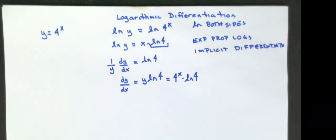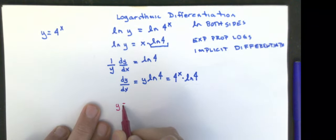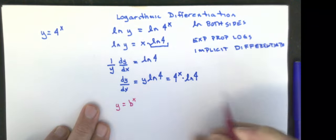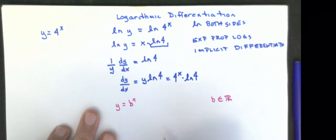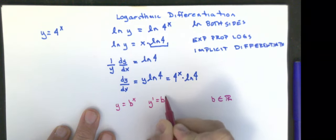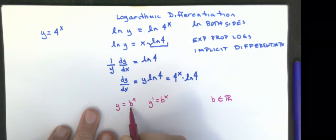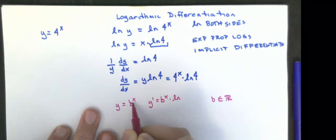But I know what y is — y is 4 to the x. So my answer is 4 to the x times natural log of 4. That's the process I would go through and use.